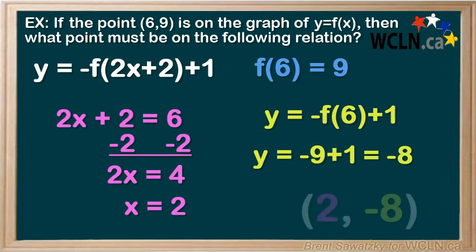So when x is 2, y is negative 8. And we know that this is a legitimate point on our transformed relation.